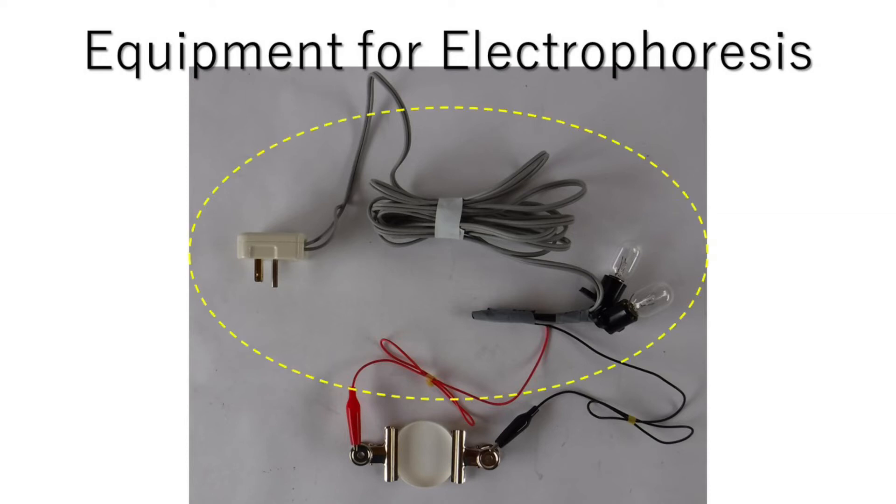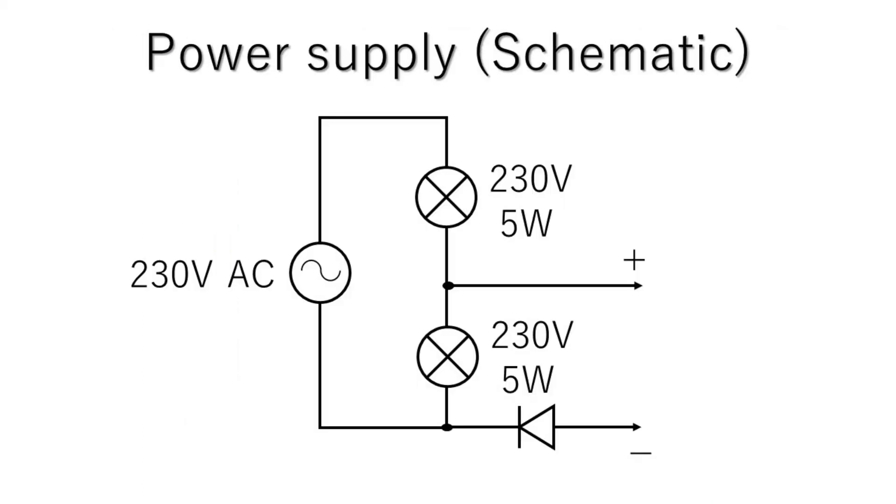The direct current supply of 50V is needed to make electrophoresis. This is the schematic of DC power supply.